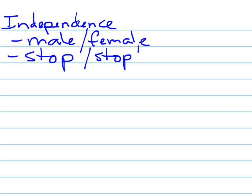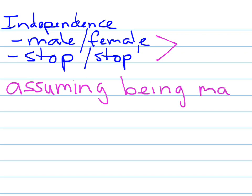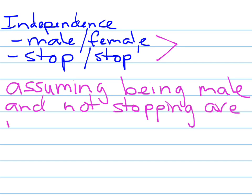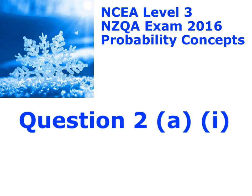When we're talking about the independence, we're talking about the independence of these two variables. We're assuming that whether somebody is male or female is independent from whether they stop or do not stop. So we are assuming that being male and not stopping are independent. And that is the answer to question 2A part 1. Thank you.